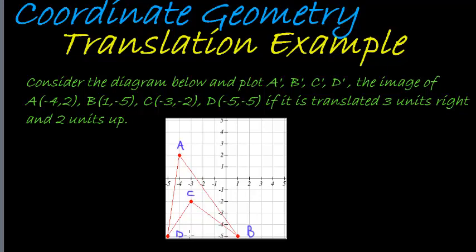And then this one must be D. So what is this graph going to look like if we translate it three units to the right and two units up?